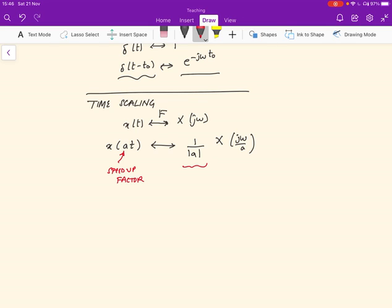And then of course, the amplitude is divided by one over A, and the frequency is divided by the value, is multiplied by the value A,